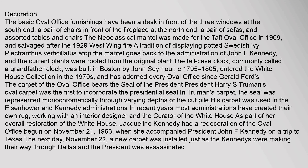The basic Oval Office furnishings have been a desk in front of the three windows at the south end, a pair of chairs in front of the fireplace at the north end, a pair of sofas, and assorted tables and chairs. The neoclassical mantle was made for the Taft Oval Office in 1909 and salvaged after the 1929 West Wing fire. A tradition of displaying potted Swedish ivy atop the mantle goes back to the administration of John F. Kennedy. The tall case clock, commonly called a grandfather clock, was built in Boston by John Seymour, circa 1795–1805.